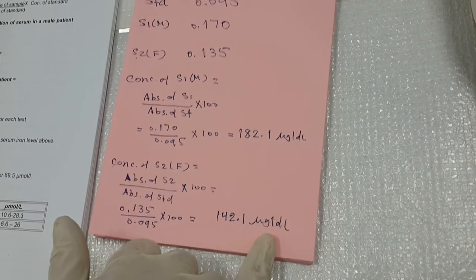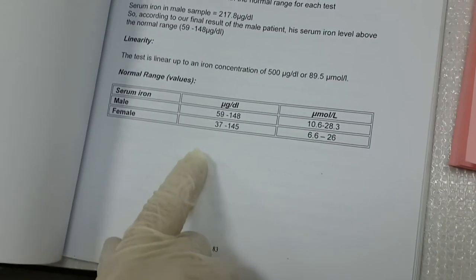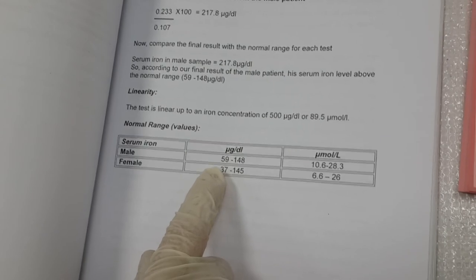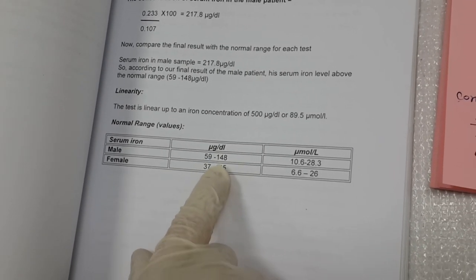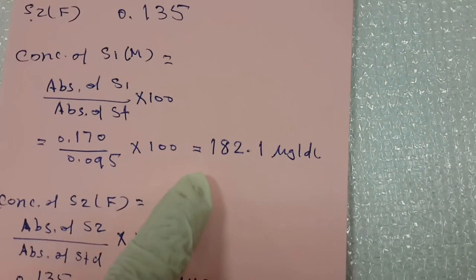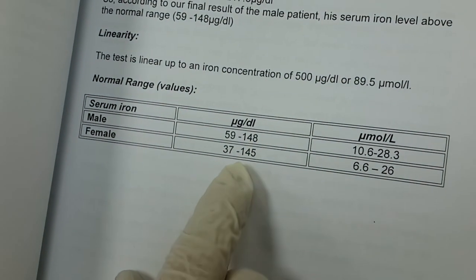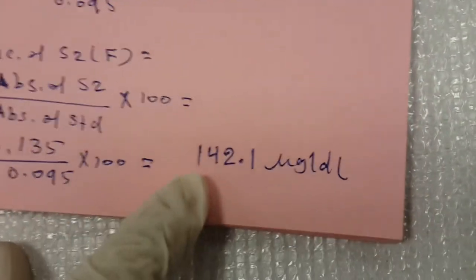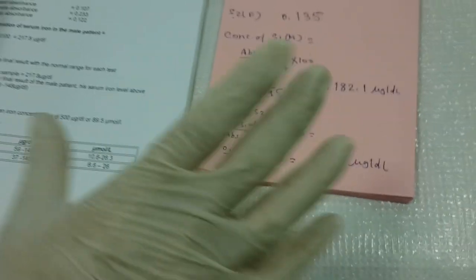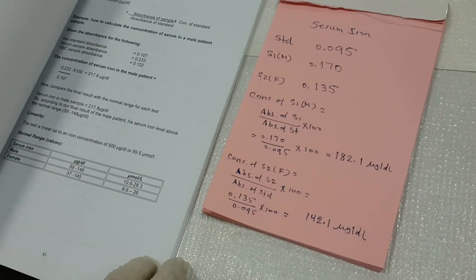Now we have to know are they normal or abnormal. We have to go back and see the normal range for male and female, which is in your manual page number 83. For male, the normal range should be between 59 to 148 microgram per deciliter. Look here, it's 182, that means abnormal high, that has toxicity or iron overload. Go to the female, from 37 to 145. Here, 142, that means it's normal, it's within normal range. And that's all, how you can determine the iron and interpret the results. Thank you.